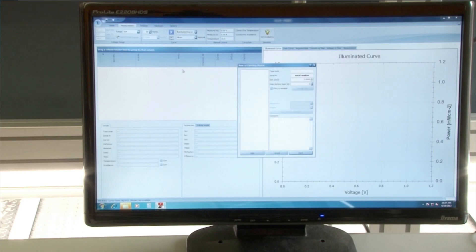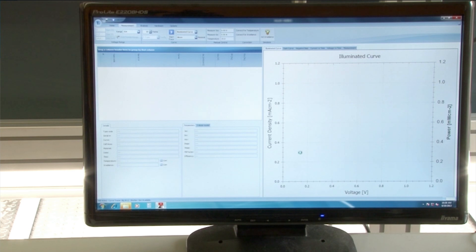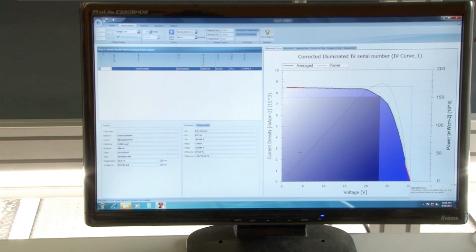A software program controls the JV measurement. The voltage over the panel is varied while the current is measured. On the screen the resulting JV curve and power density is plotted from 0 volts up to the open-circuit voltage.